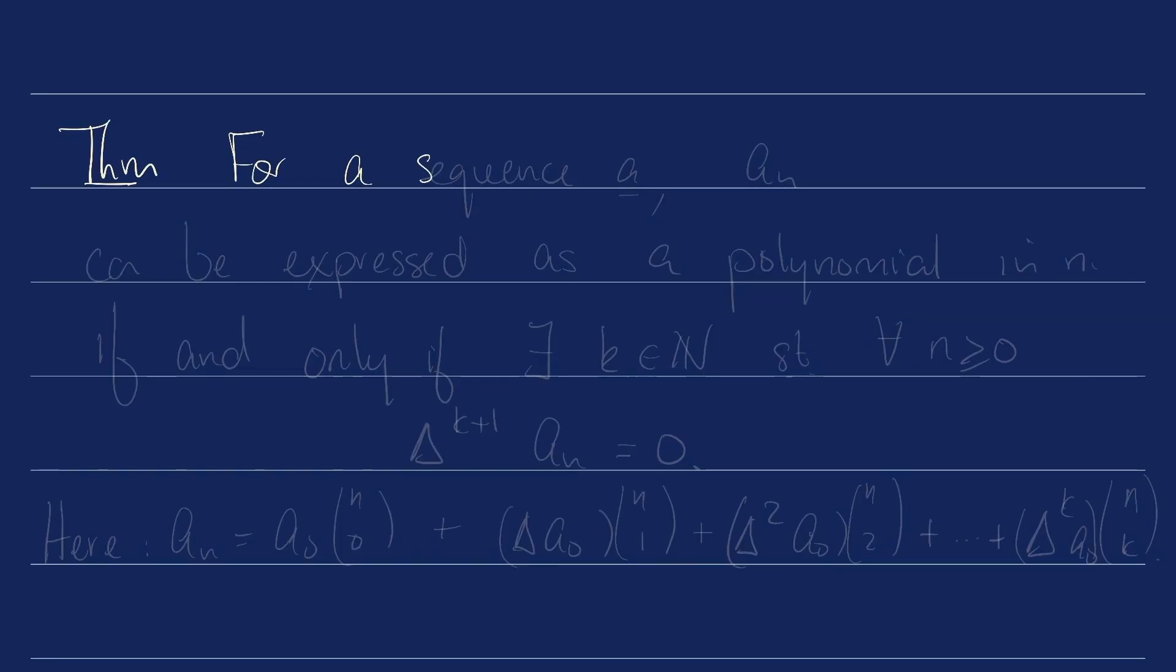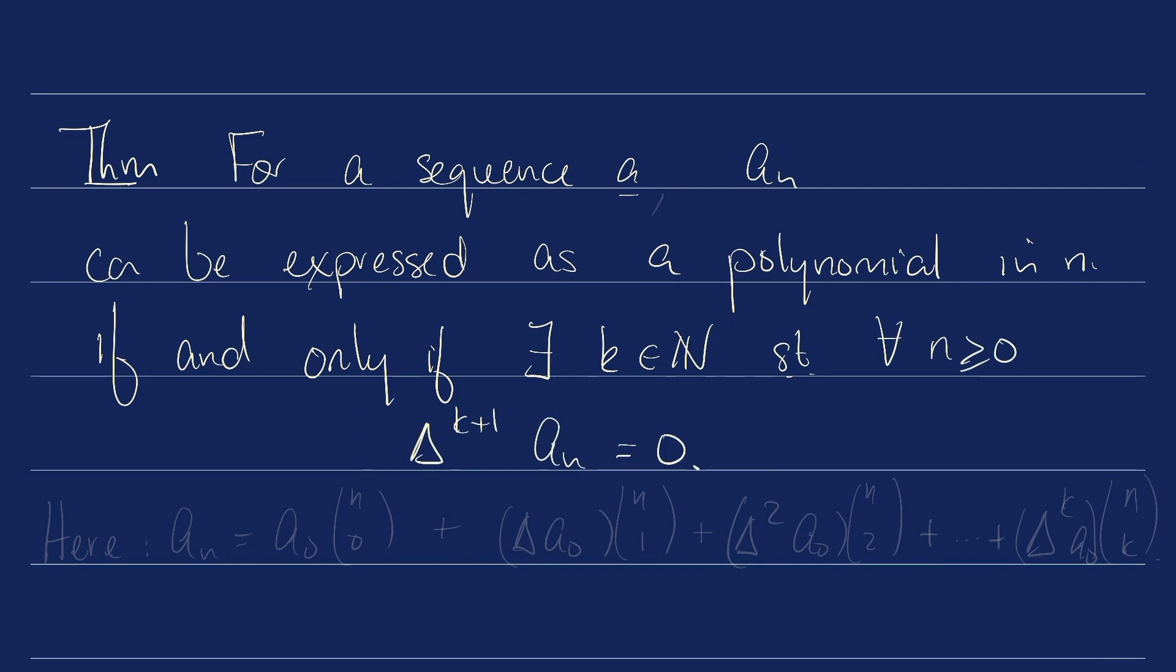Third and last result: When you have a sequence a, a_n can be expressed as a polynomial in n if and only if there is a k, a natural number k, such that for all n greater than zero, the difference operator applied k plus one times to the sequence gives you the zero sequence. In this particular case, we know how to find what that polynomial is. a_n is going to be a_0 times n choose 0 plus delta of a_0 times n choose 1, all the way up to delta k of a_0 times n choose k.